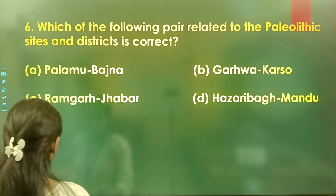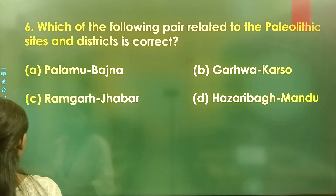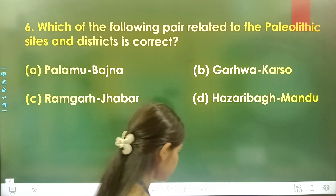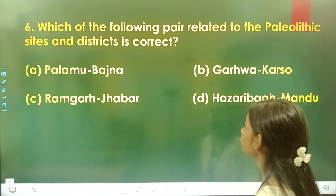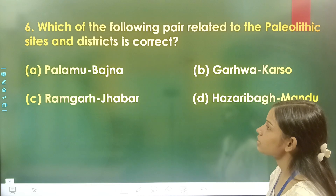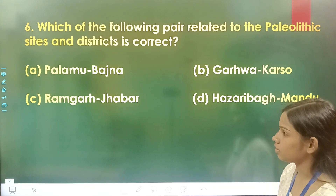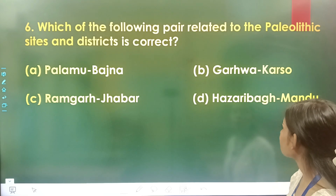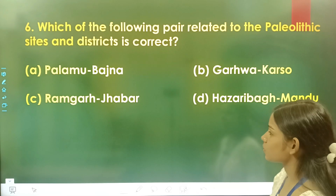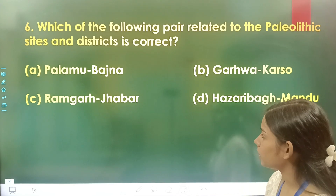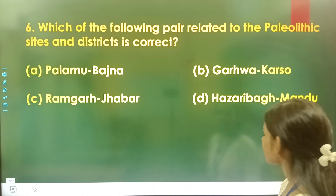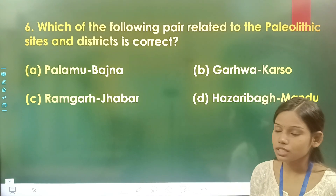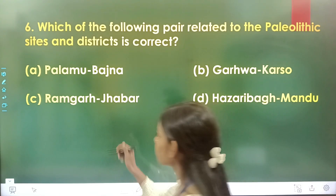Question number 6: Which of the following pairs related to Paleolithic sites and districts is correct? Option A is Palamu-Bajna, option B is Gadwa-Karsu, option C is Ramgarh-Jhabar, and option D is Hazaribag-Mandu. The correct answer is option A, Palamu-Bajna.